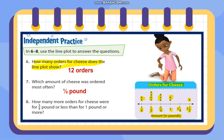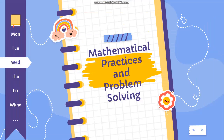How many more orders for cheese were for three-fourths pound or less than for one pound or more? Three-fourths pound or less: three-fourths has three, one-half has four, and one-fourth has two — combined that is nine. One pound or more: one pound has two, one and one-fourth has zero, and one and one-half has one — that is three. Nine minus three equals six more orders.